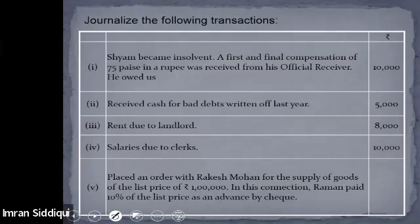Moving to the next question. Take a screenshot of the question. Five transactions are given here and we need to pass the general entry for each of them.